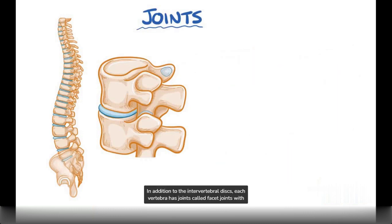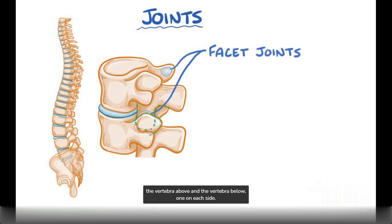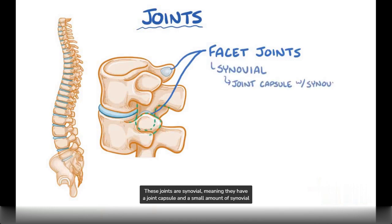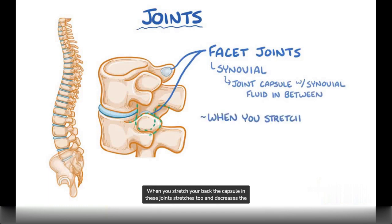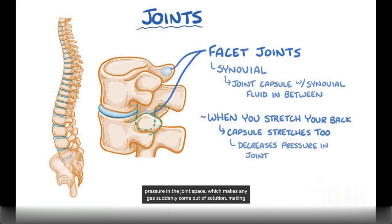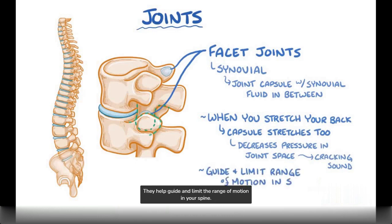In addition to the intervertebral discs, each vertebra has joints called facet joints with the vertebra above and the vertebra below, one on each side. These joints are synovial, meaning they have a joint capsule and a small amount of synovial fluid in between. When you stretch your back, the capsule in these joints stretches too and decreases the pressure in the joint space, which makes any gas suddenly come out of solution, making a cracking sound. These help guide and limit the range of motion in your spine.